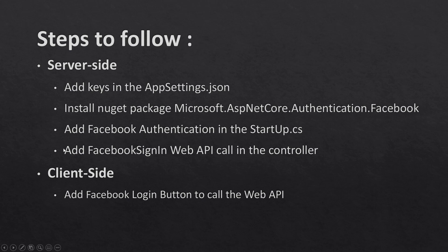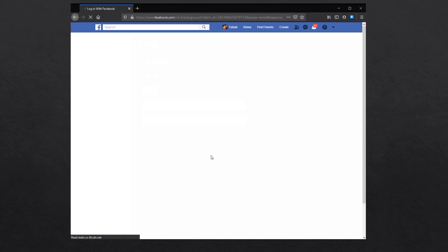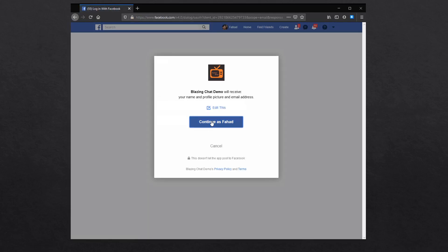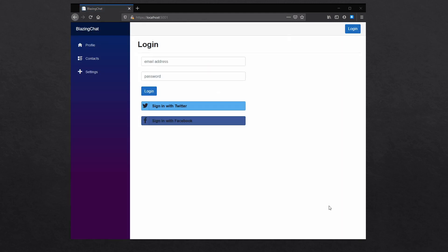Once I'm done with that, I'm going to add a web API call in my controller which I'm going to call Facebook Sign In, and I'm going to call this web API from my client side to actually log in with a Facebook user in my Blazing Chat application. Once we follow all these steps, we should be able to log in, so let's go ahead and make some changes to integrate Facebook authentication in this app.